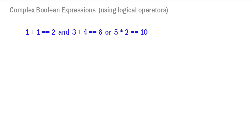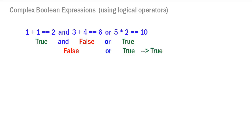We can have complex boolean expressions with more than two boolean values. For example: '1 plus 1 is equal to 2 and 3 plus 4 is equal to 6 or 5 times 2 is equal to 10'. Evaluating left to right: true and false gives false, then false or true — since one side is true with 'or' — the whole expression is true.